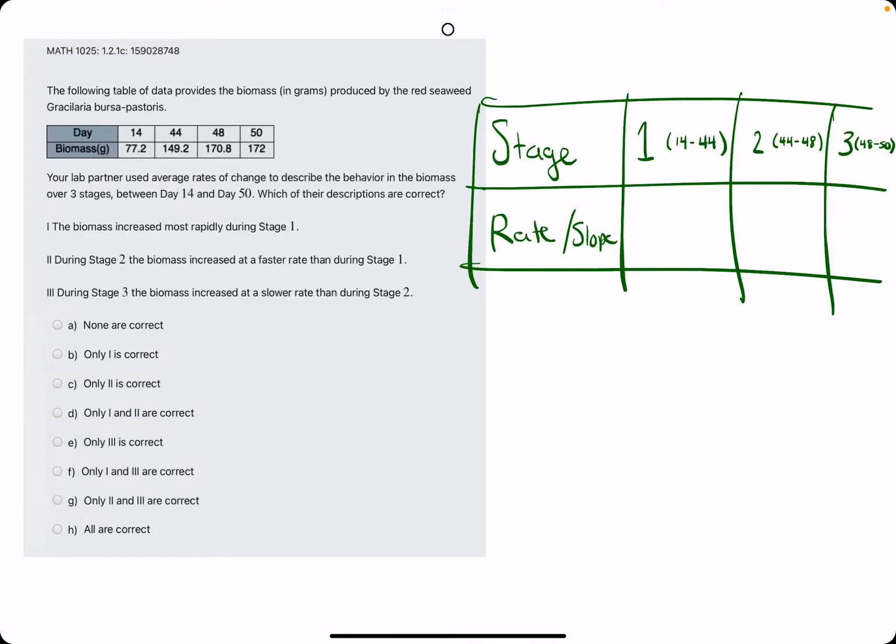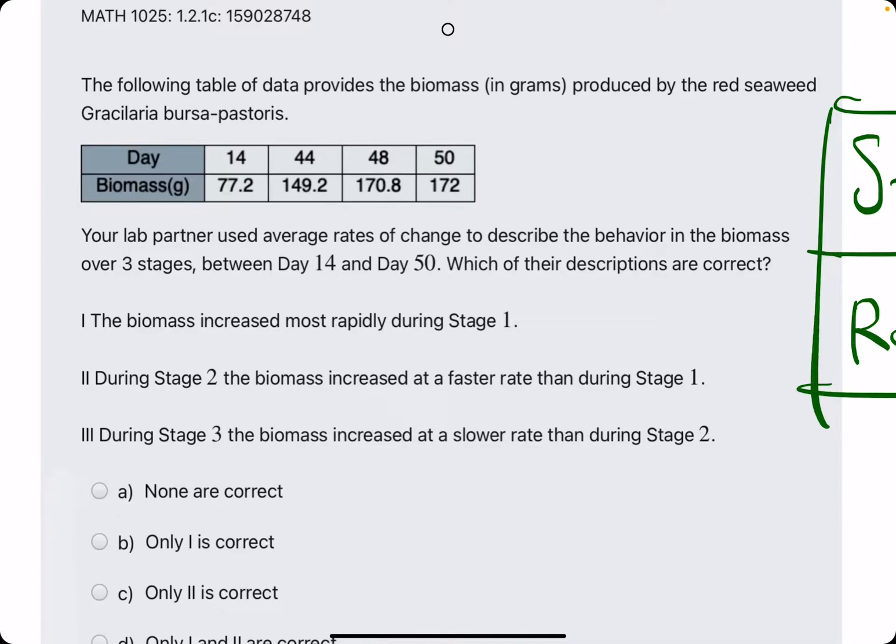Okie dokie. In this problem, they give us a chart of day and biomass values. They mention something about average rates of change, which is just a fancy phrase for slope between two points to describe the behavior in the biomass over three stages between day 14 and 50.